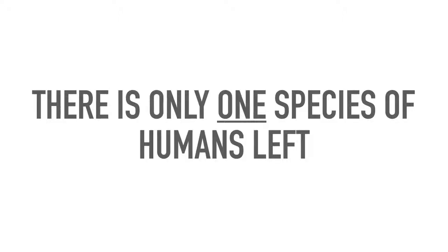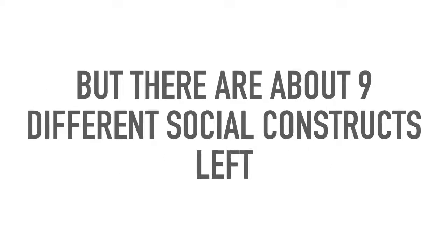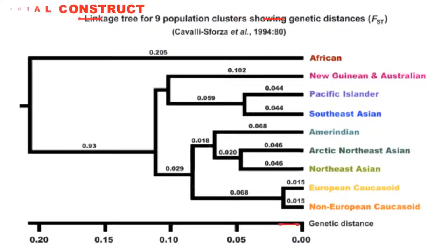So this is a social construct — because there's only one species of humans left. But there are about nine different social constructs left. Here's a list of social constructs. If you just ignore the parts that say 'genetic,' you can see quite clearly that there are like nine different types of social construct.